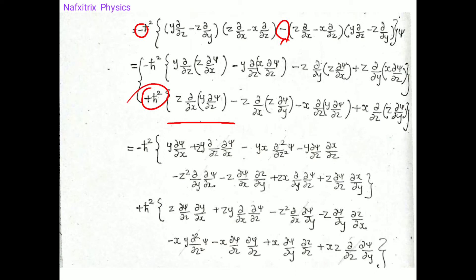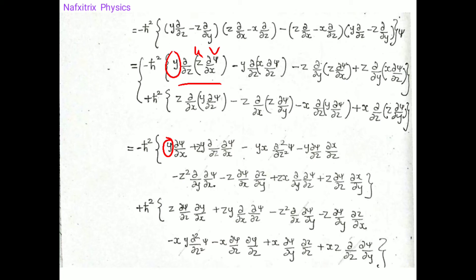Here we have a minus sign and another minus sign, so minus times minus gives plus, giving +ℏ² for that contribution. Now we need to apply the product rule (uv differentiation: v·du + u·dv). For the first term, u = z and v = ∂ψ/∂x.